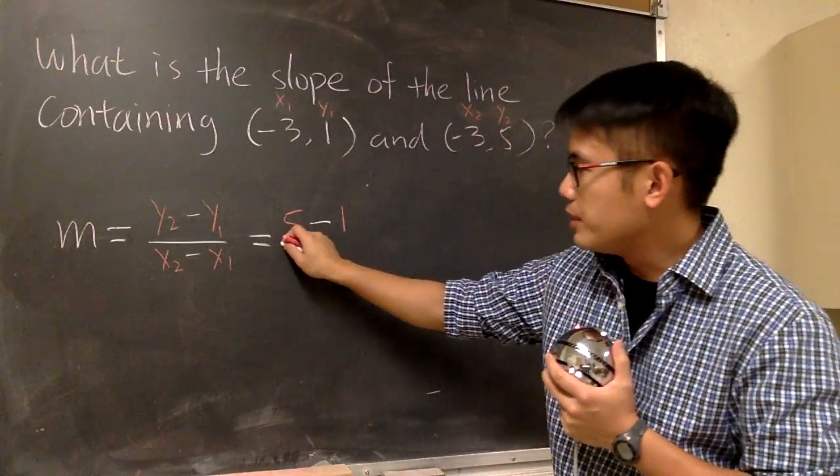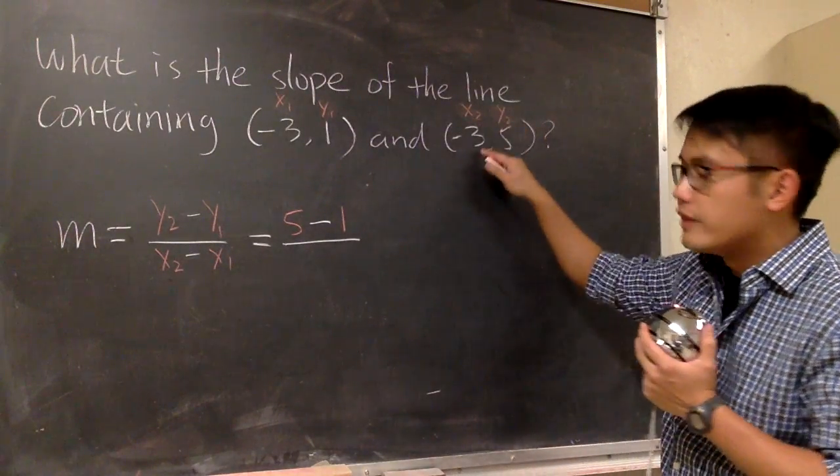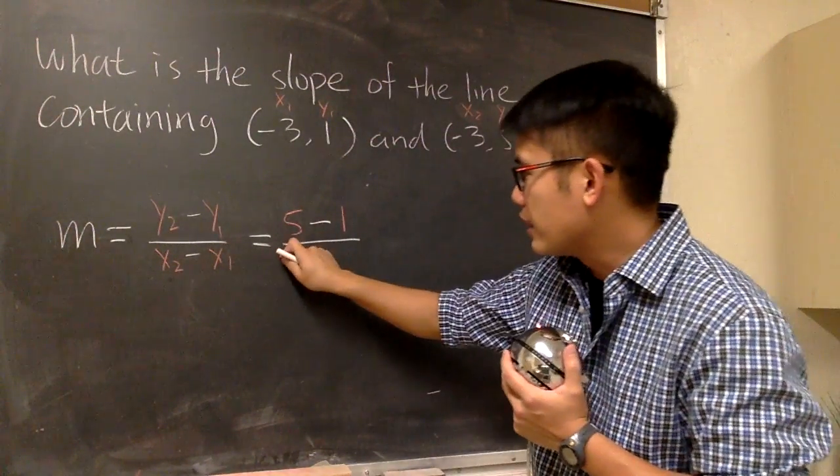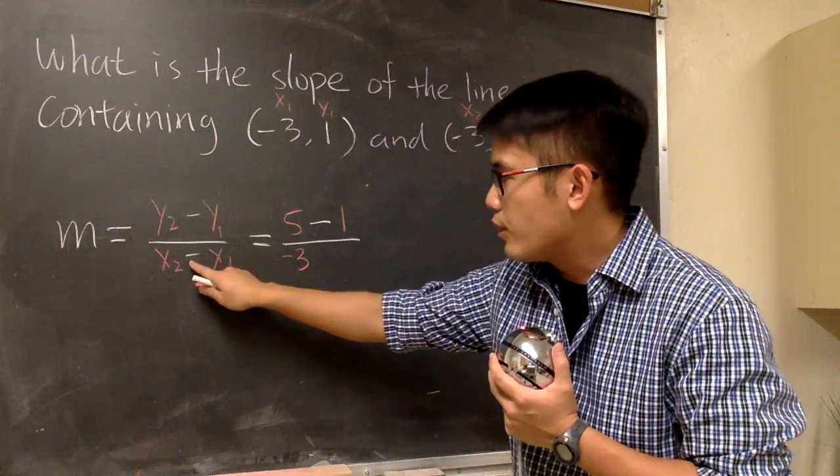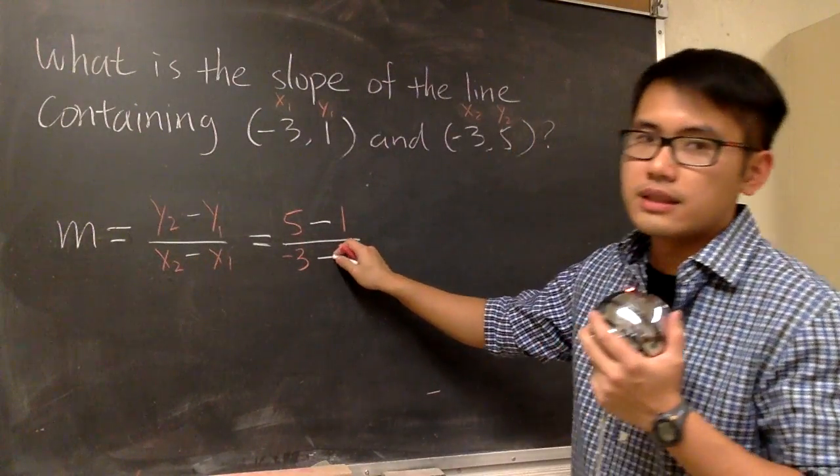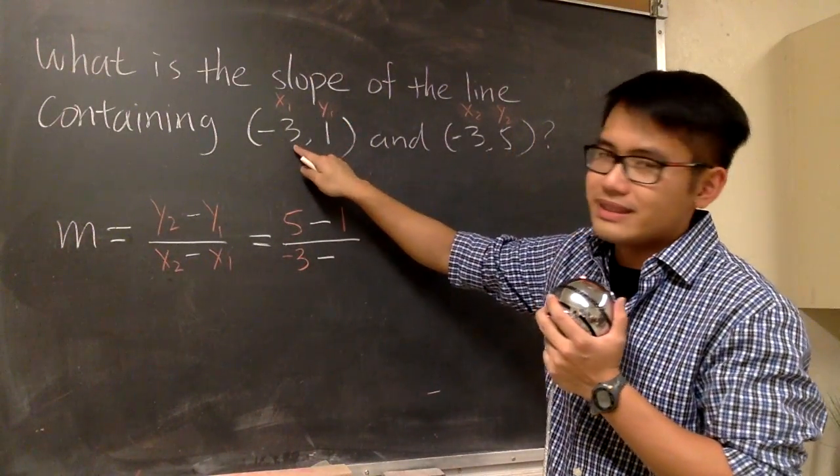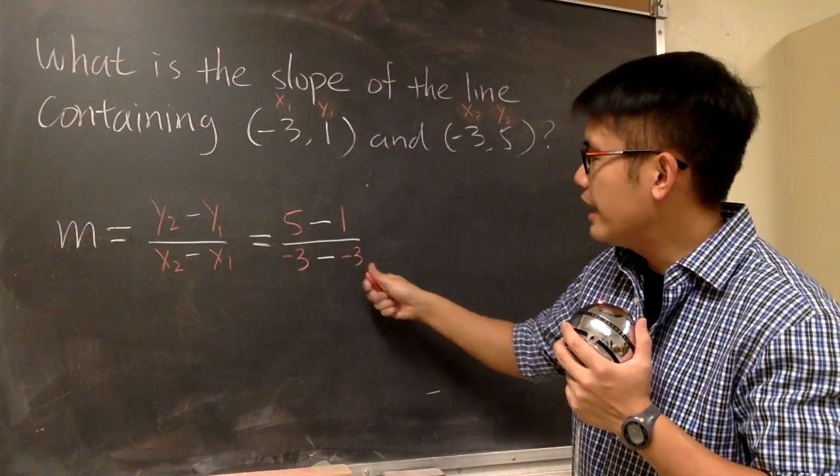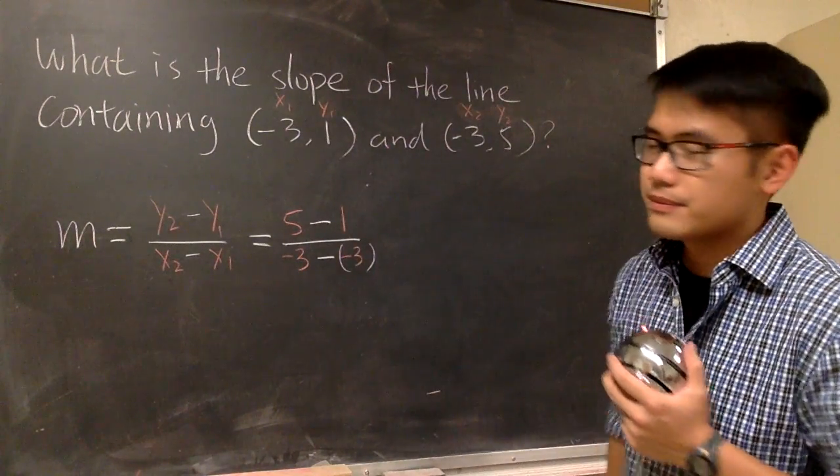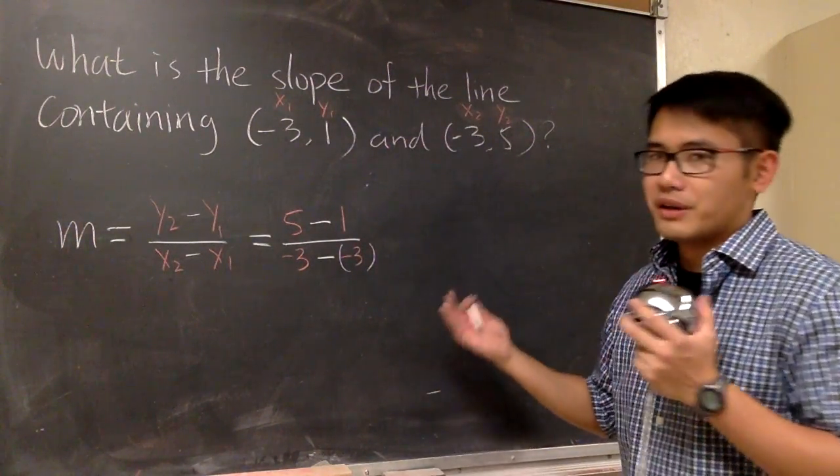And then this is going to be over x2, which is -3, right? So let's put down -3. And then we are going to subtract x1 value is -3. So let me put down -3, and let me put a parenthesis on it. And now we just have to work this out.